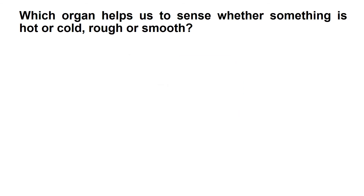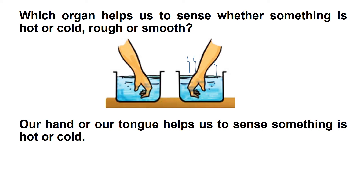The skin — which organ helps us to sense whether something is hot or cold, rough or smooth? Our hand or tongue helps us to sense whether something is hot or cold. Also, our hand helps us to sense roughness or softness of an object. Here we can see that the skin of our hands helps us to know about that object. So let's see what exactly the skin is.